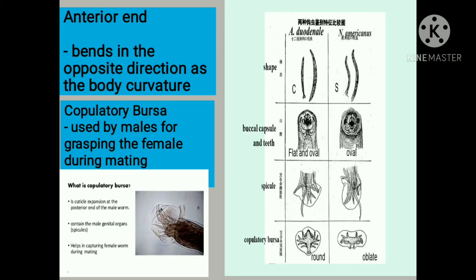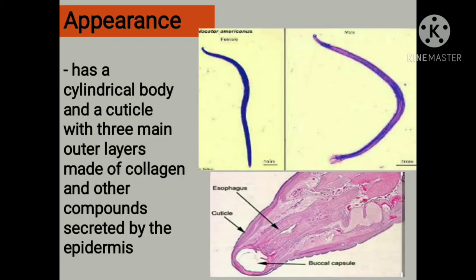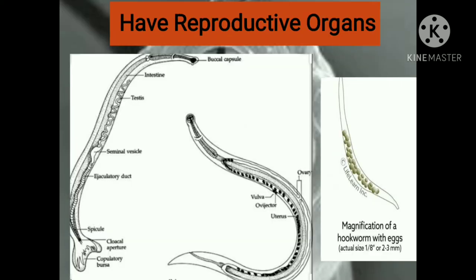Its size is small and slender. It bends in the opposite direction as the body curvature. It has no posterior spine. It has a copulatory bursa which is used by males for grasping the female during mating. It has a cylindrical body and a cuticle with three main outer layers as its appearance, which is made of collagen and other compounds secreted by the epidermis. It also has reproductive organs for reproduction in the intestines of the host.